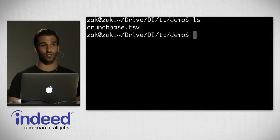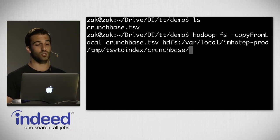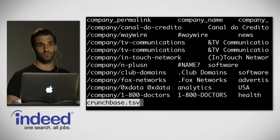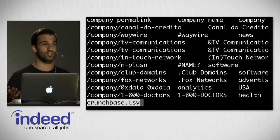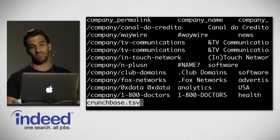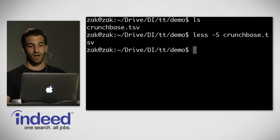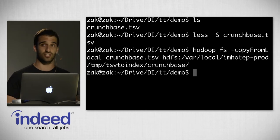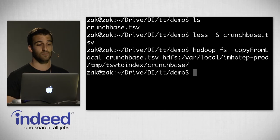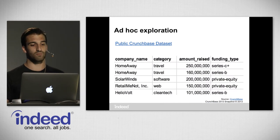I'm going to upload a dataset to Imhotep live right now. In this directory I have crunchbase.tsv — a file downloaded from Crunchbase's public website. It's just tabular data: we have company permalink, company name, category code, and other fields. I'm going to go ahead and copy this from local and put it into a special directory inside of Hadoop that Imhotep knows to index. Each row in this dataset is an investment that's occurred for a company.